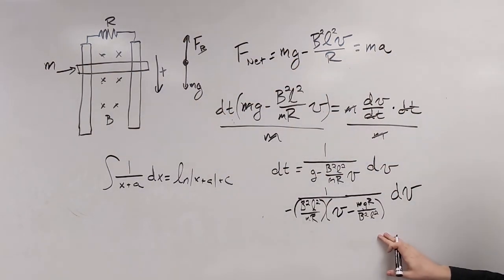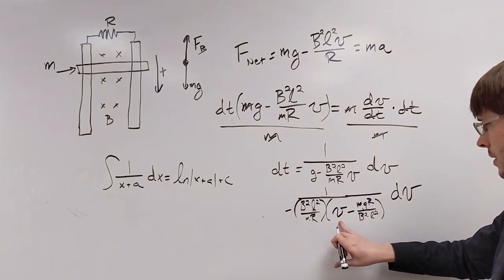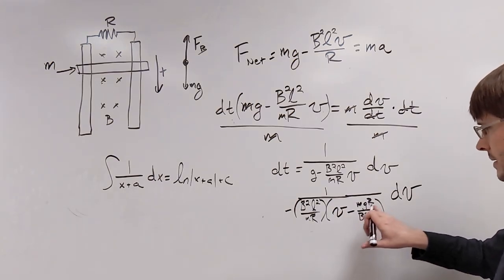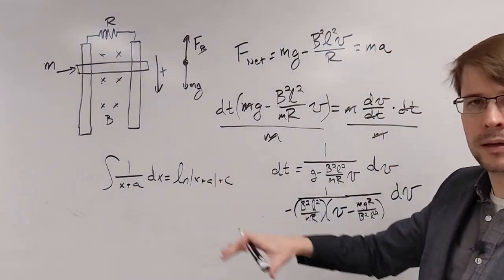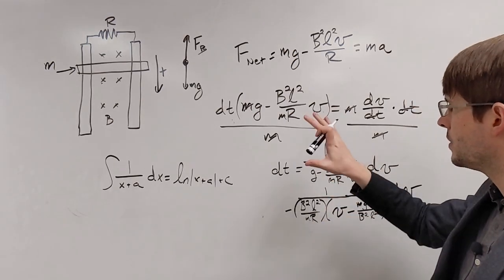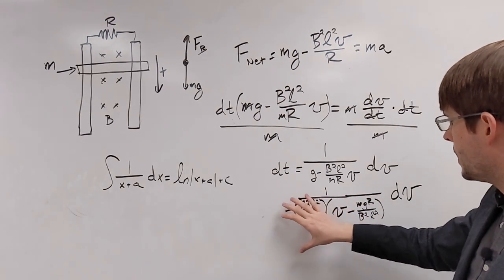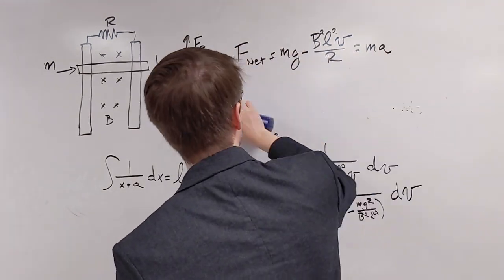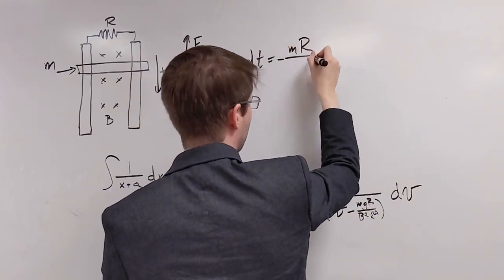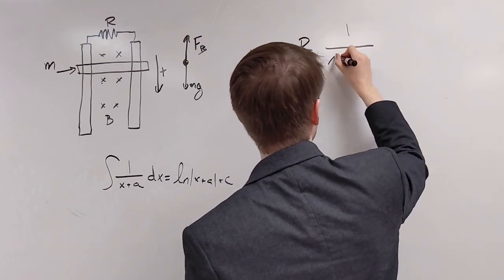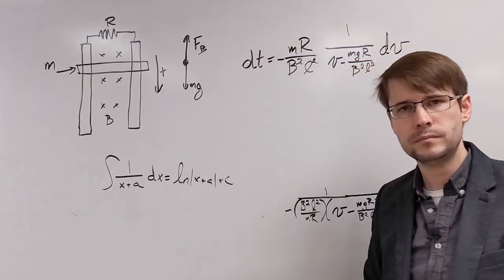I'm basically going to pull out a factor of negative b squared l squared over mr out of this denominator. So I've rewritten it here, pulled this out. So now this looks something like x, which I'm using v here, minus a constant, which is the same as plus a negative constant. So we've got something that looks a lot more like this. I'm going to rewrite this a little bigger and a little more and clean up some of this. So watch here as I'm going to take this and bring it back up.